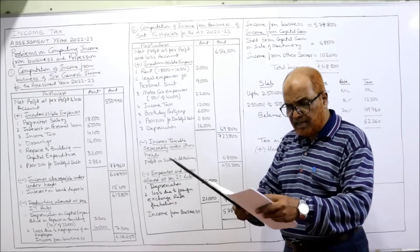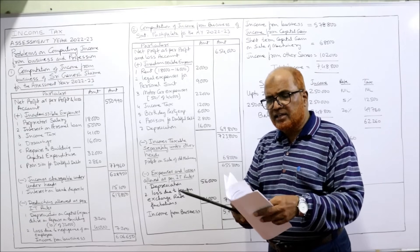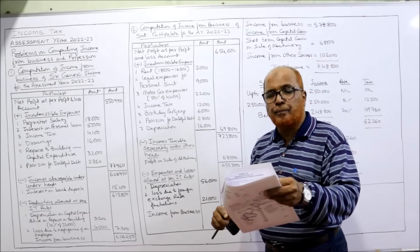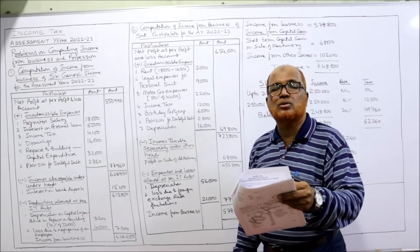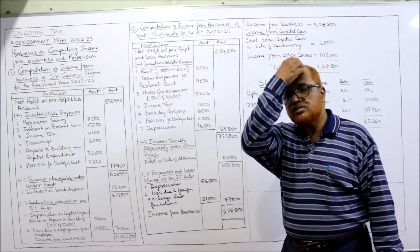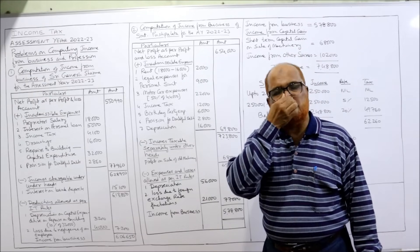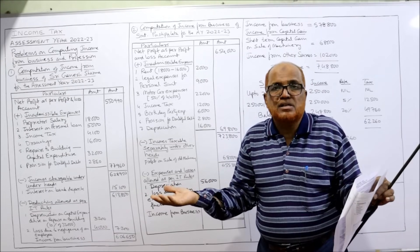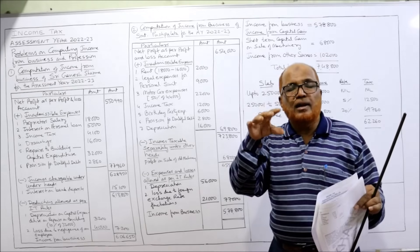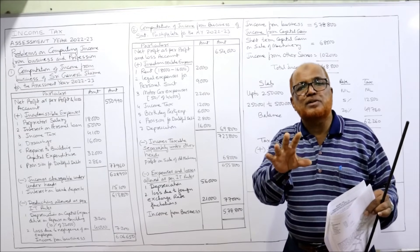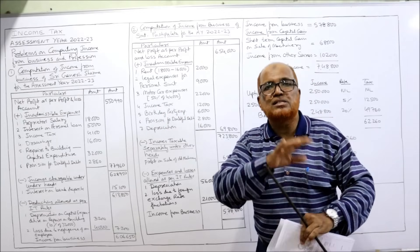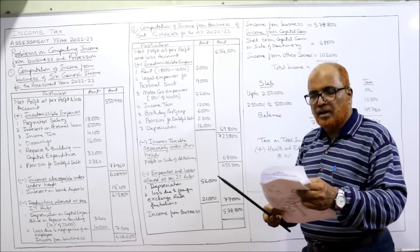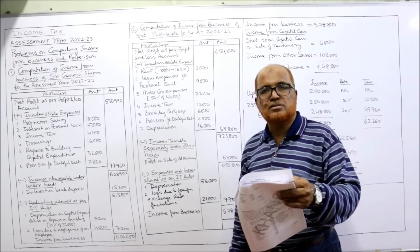Legal expenses: for protecting the business — 30,000 — allowed; for personal suit — 9,000 — disallowed. Legal expenses incurred to protect the business are a business expenditure and allowed, whereas legal expenses for a personal suit are personal, not related to business — disallowed. Legal expenses for personal suit — 9,000 — disallowed.